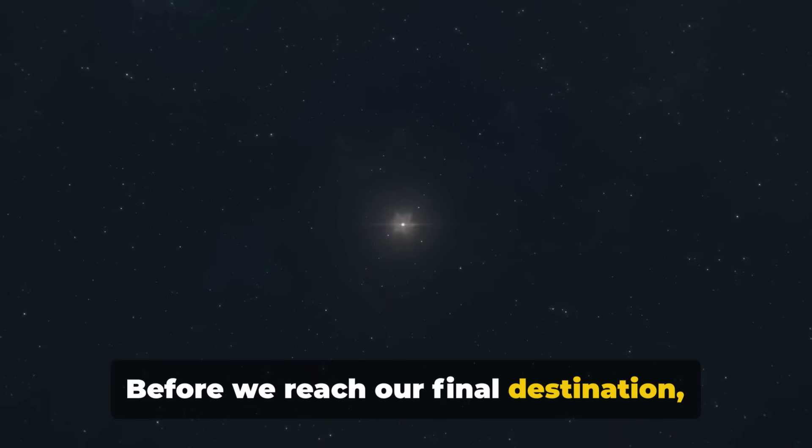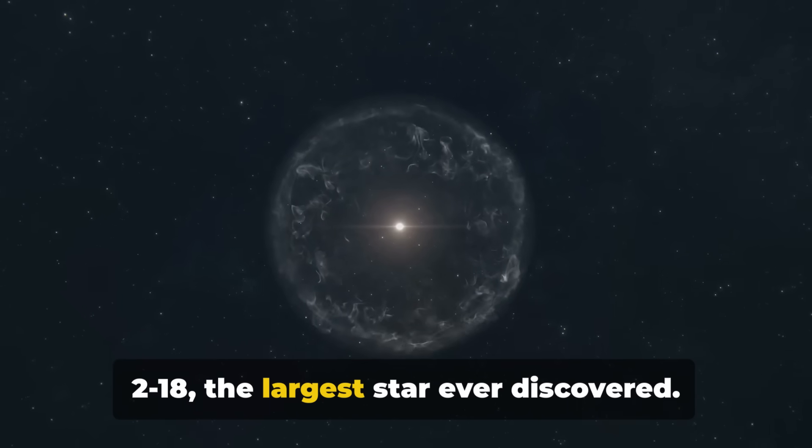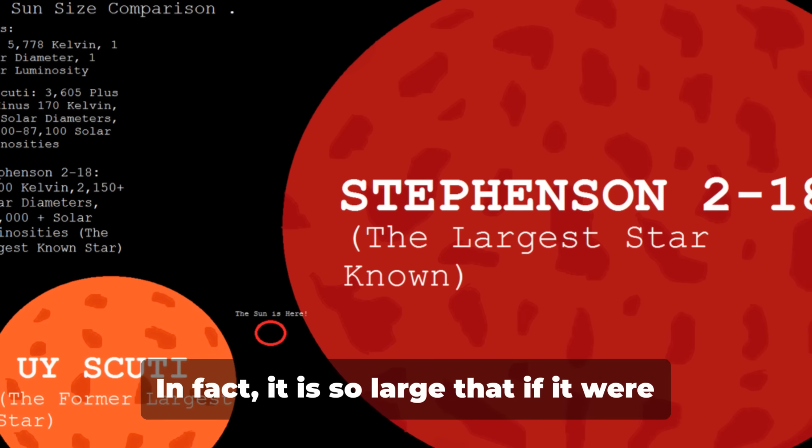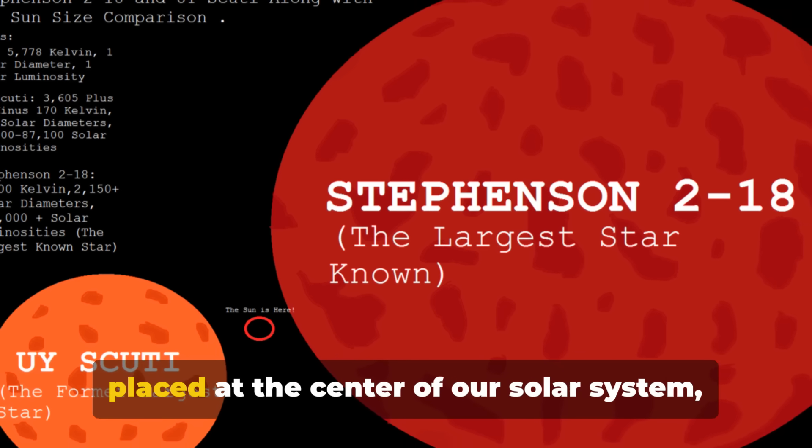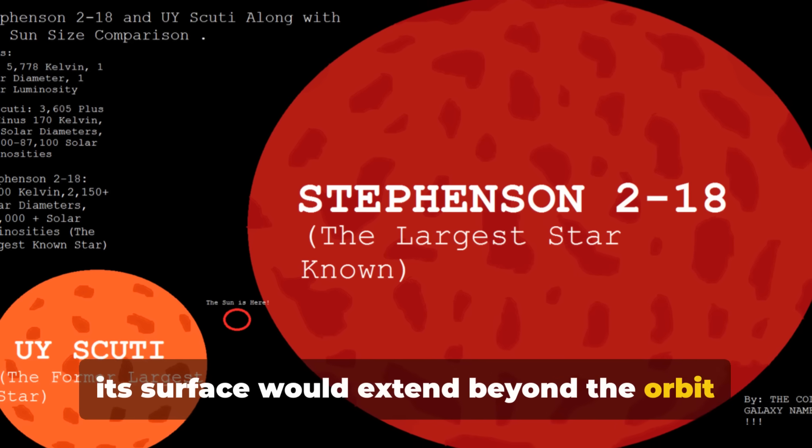Before we reach our final destination, let's take a detour to visit Stevenson 2-18, the largest star ever discovered. This red supergiant is known for its enormous size. In fact, it is so large that if it were placed at the center of our solar system, its surface would extend beyond the orbit of Jupiter.